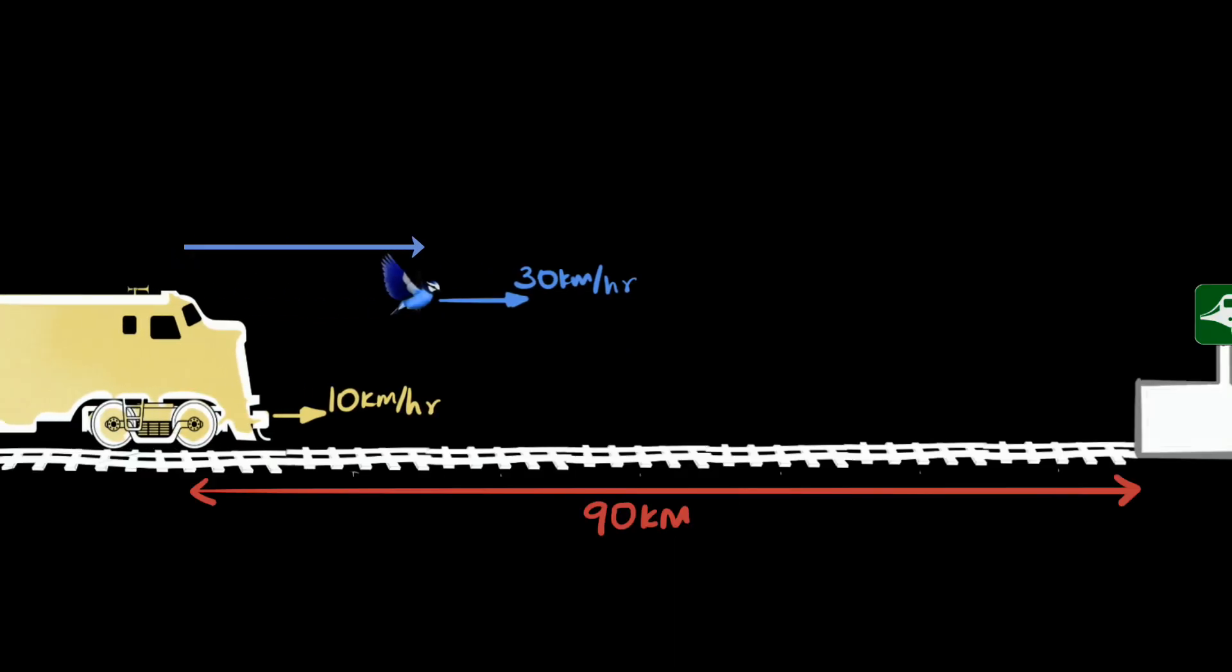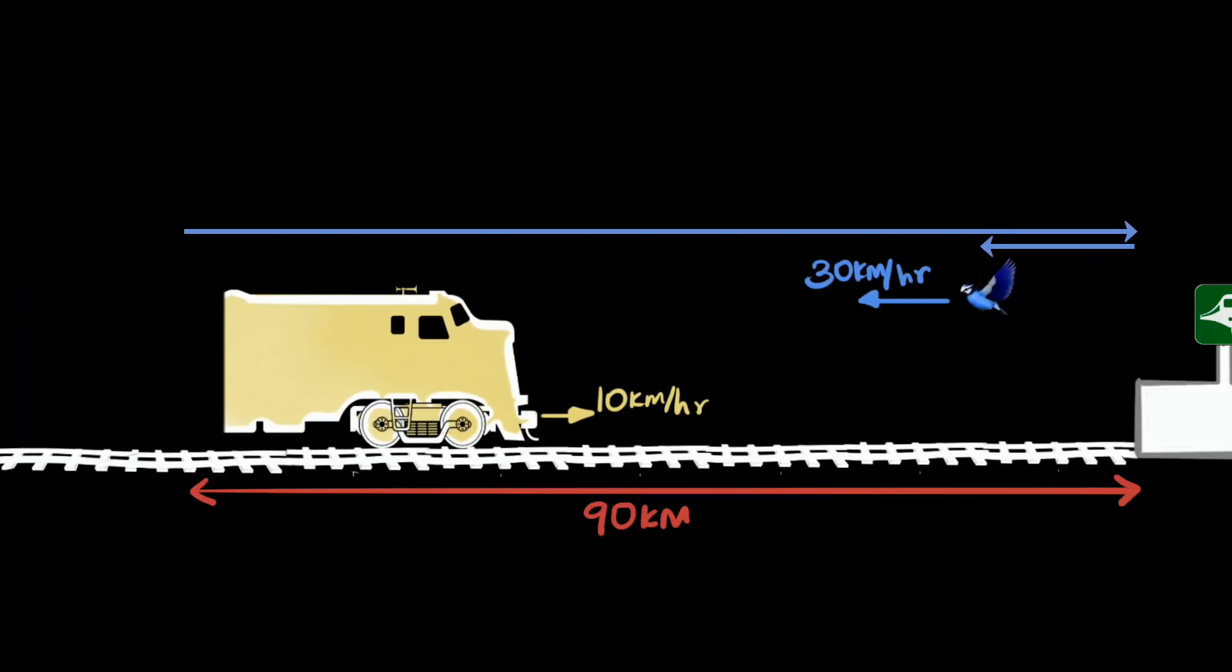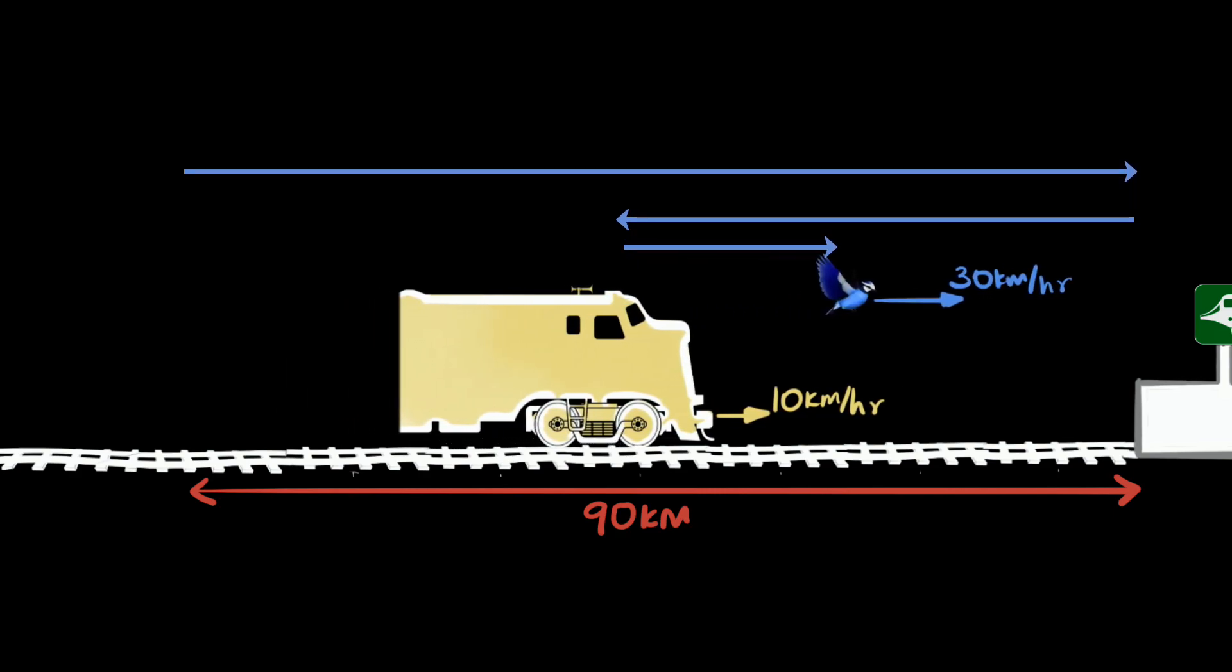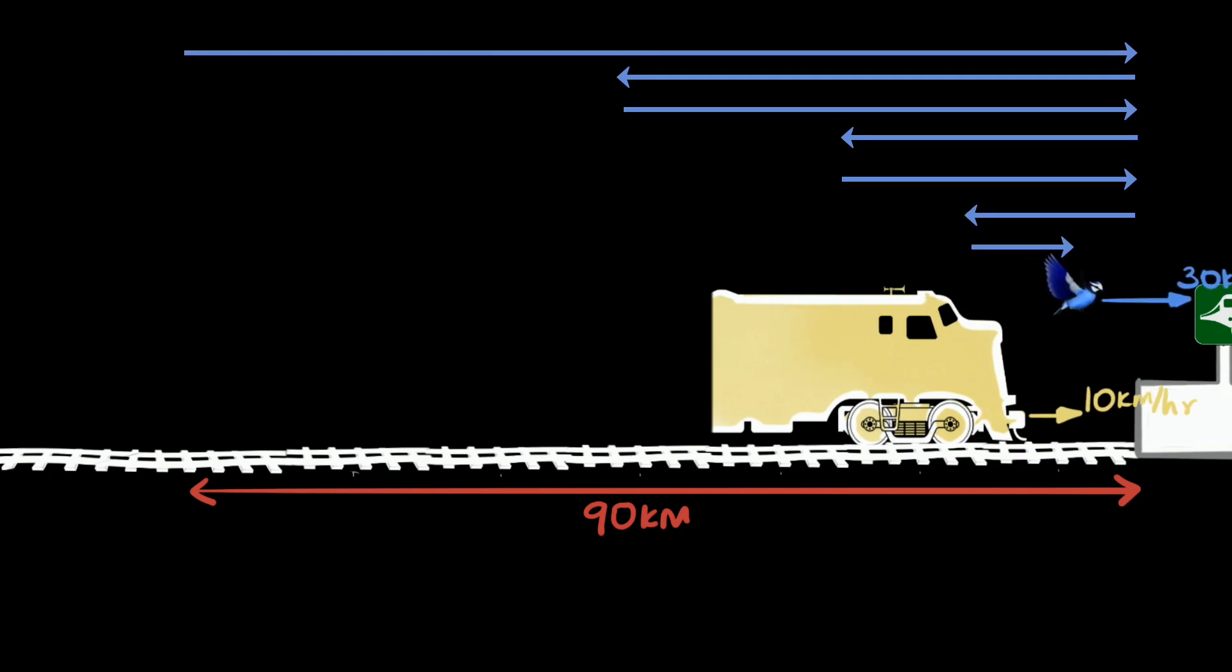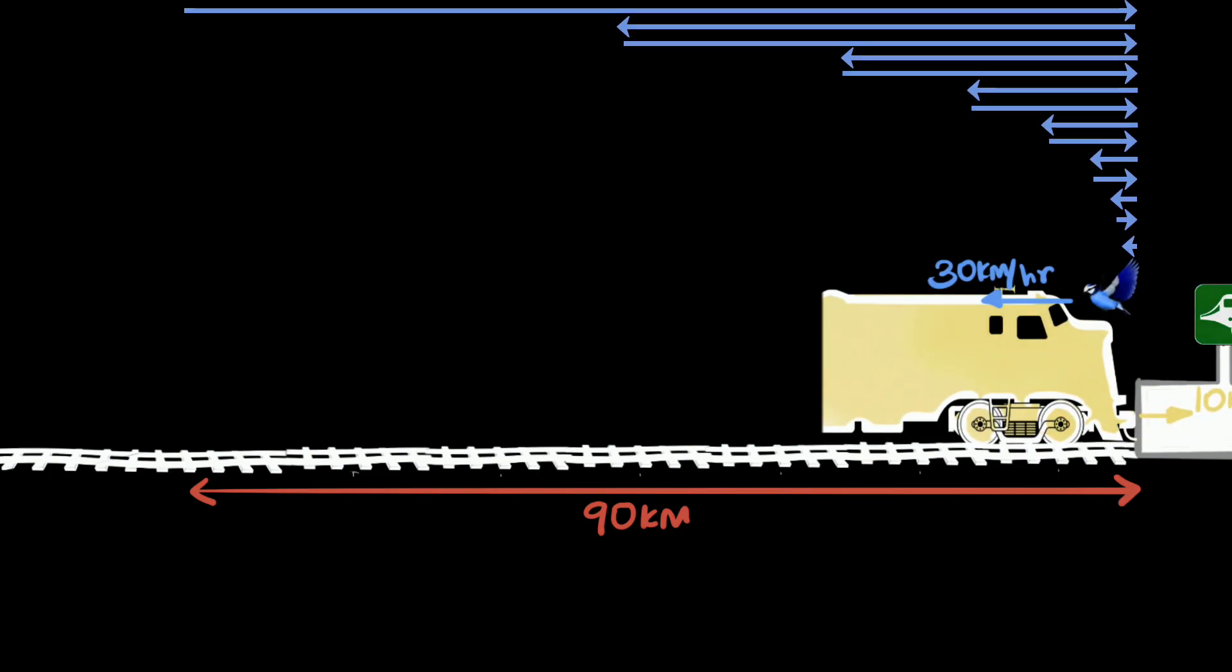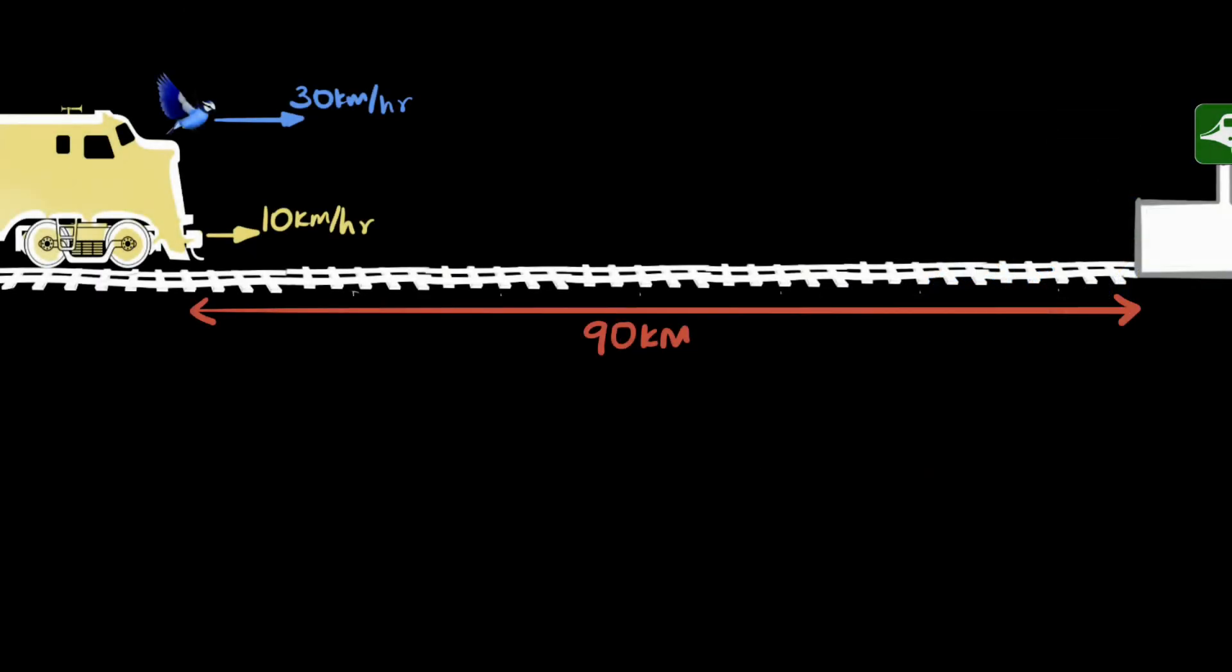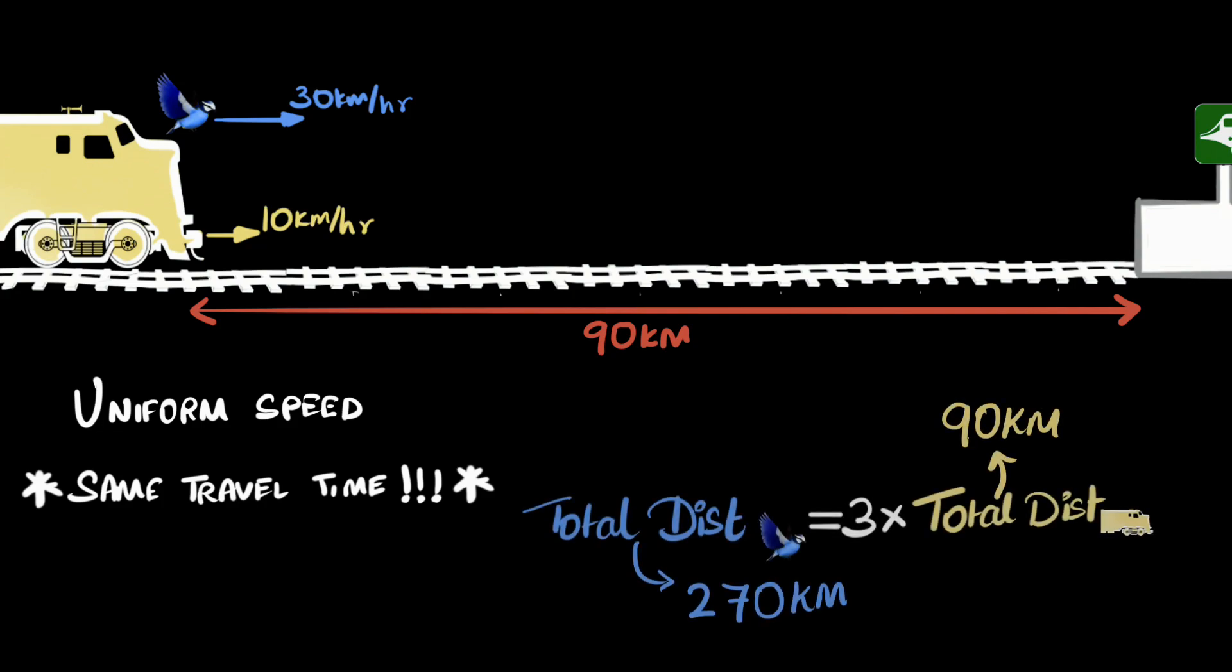So as we reflect back on the problem, we realize that the puzzle tried to make us think that we need to focus on the fact that the bird is continuously changing its direction and we need to think about the distance it travels in each of the flights. But as we take a step back, we realize that the most important feature is that they're traveling with uniform speeds and they're traveling with the same time.